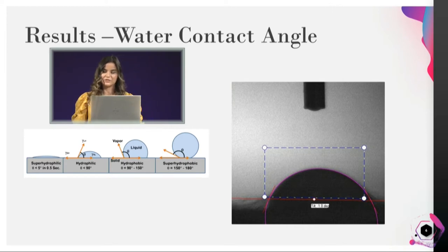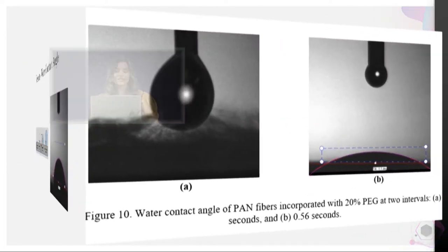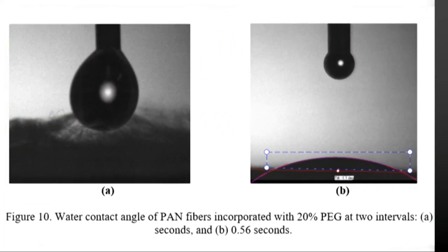On the right side, we have a superhydrophobic nanofiber, which would have an angle of 150 to 180 degrees. In my next slide, you can actually see the results from my 20% PEG nanofiber. On the right-hand side picture, you can see that the angle of the water droplet is less than 5 degrees, and this was achieved in 0.56 seconds. On the left-hand side of my slide, you can see the nanofiber actually absorbing the water droplet before it's even released from the needle.